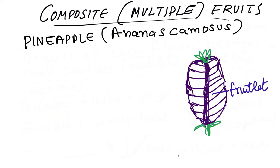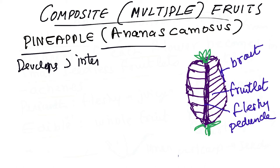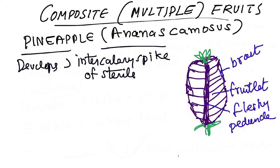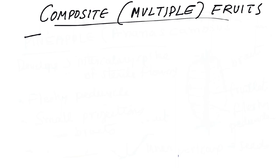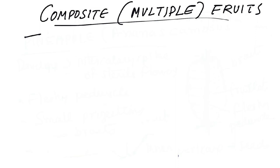As with mulberry, pineapple also has fruitlets arranged throughout the fruiting structure. There are bracts appearing as spine-like structures coming from the surface of the fruit. Key points: pineapple develops from an intercalary spike of sterile flowers — the flowers are not fertilized. The edible part is the fleshy epitome (thalamus), and the bracts are visible as small spiky structures on the surface.